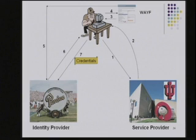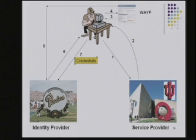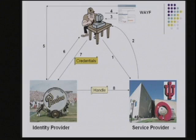Then Pete provides his username and password — it could be other credentials like a smart card or biometric, whatever Purdue needs to authenticate. At this point, Purdue knows who this subject is and can retrieve more information about him. To protect Pete's privacy, Purdue would not go to IU and reveal all this information. Instead, Purdue will make a handle at step eight to communicate about this subject. This random handle does not reveal any information about Pete other than that he is authenticated.